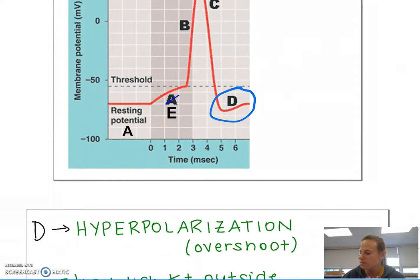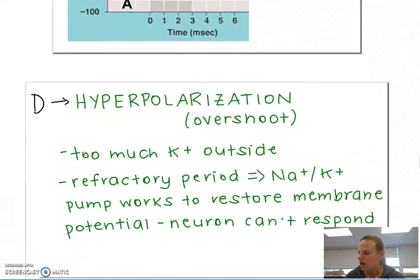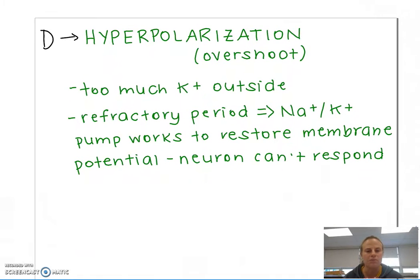But oops, I've overshot my resting membrane potential. That's called hyperpolarization, where I've let too much potassium outside of my cell. So this is called hyperpolarization.